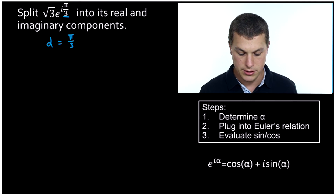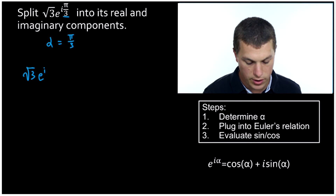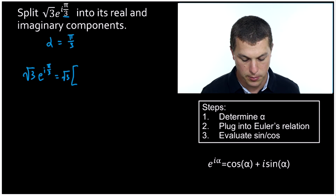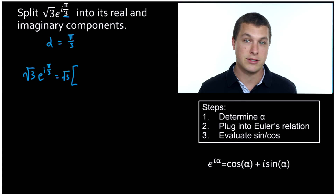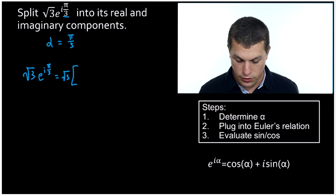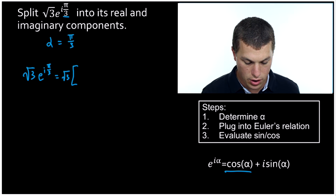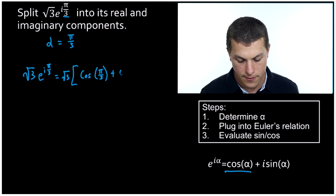Now let's use Euler's relation to rewrite this. We have the square root of three out front, and we're just going to leave it out front — put it outside brackets — and ignore it until the end, because it's multiplying the complex number rather than being part of it. So we plug our alpha into cosine and sine: cosine of pi over three plus i times sine of pi over three.